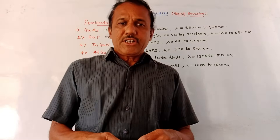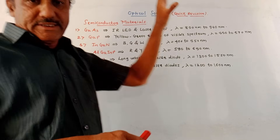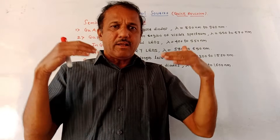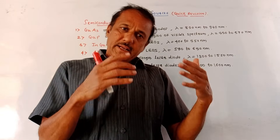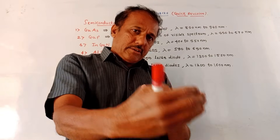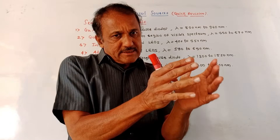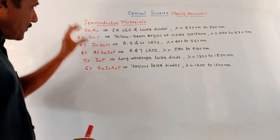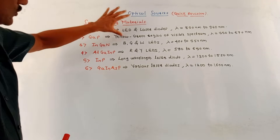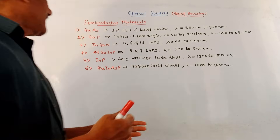Hello and welcome back to this channel. Dear students, this is the quick revision session for optical sources. In case of fiber optic cable, at the input end we have to use a suitable source — it can be an LED (light emitting diode) or a laser diode — and at the output end a suitable detector is used which converts the light rays back into electrical form. First we'll talk about the different semiconducting materials used for optical sources, in case of LED as well as laser diodes.